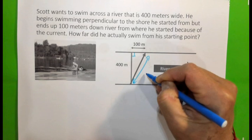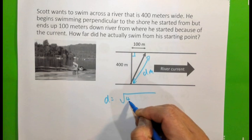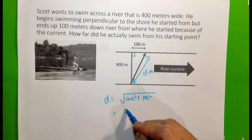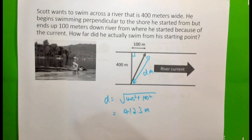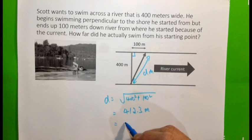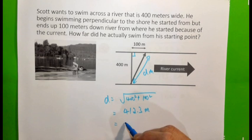Again, we know that this is 90 degrees. Therefore, the distance he swam, let's call it d metres. d is actually square root of 400 squared plus 100 squared, which is equal to 412.3 metres. Since there is no mention of decimal places, in fact, the good approximation, because we are not given any decimal place, will be 412 metres.